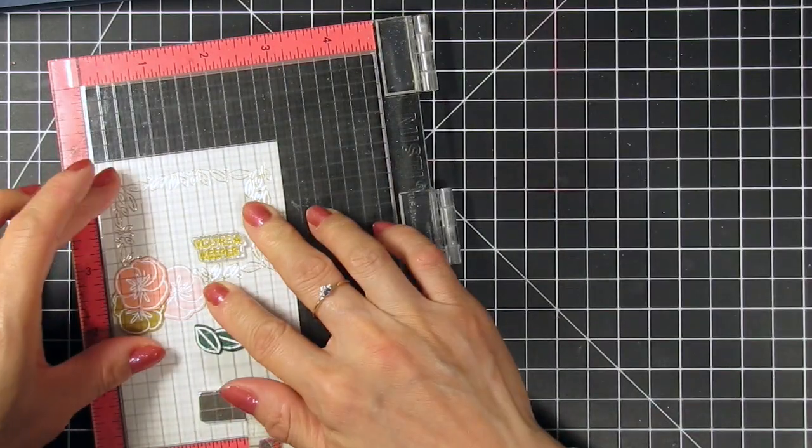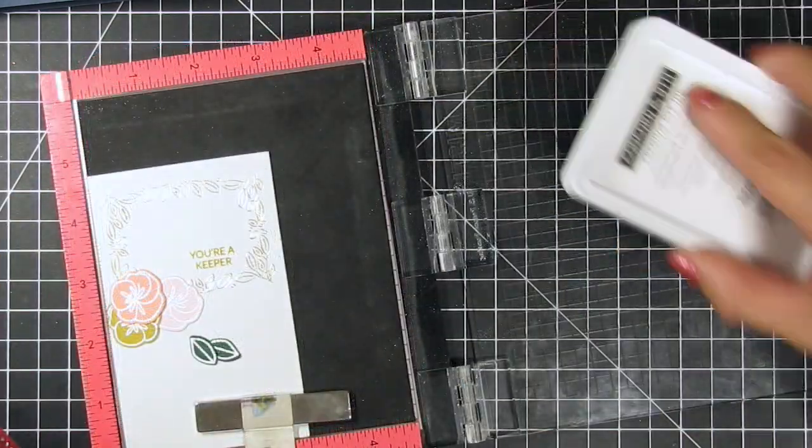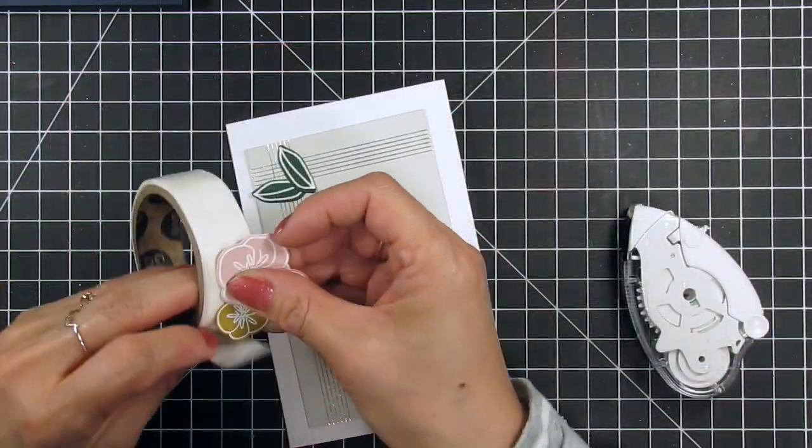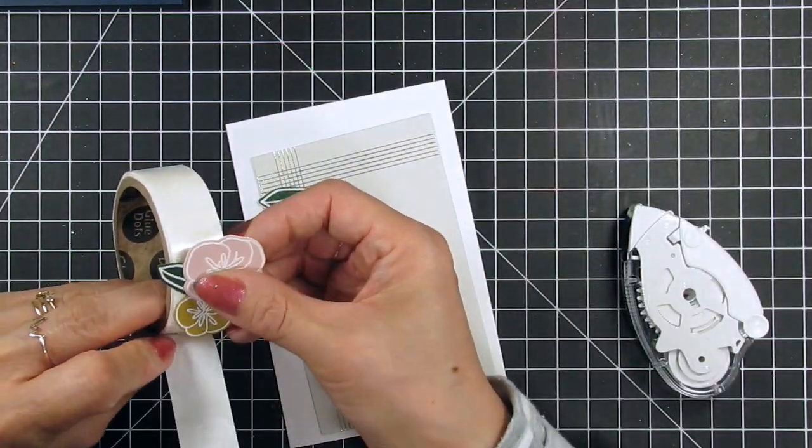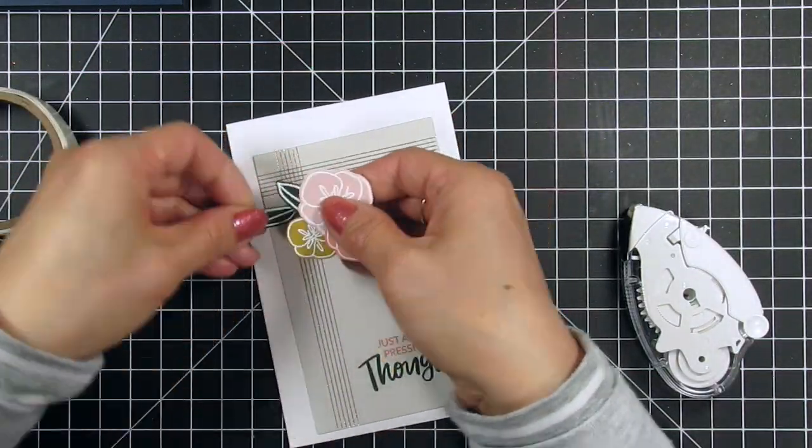After all the stamping is done I use glue dots to assemble all the flower clusters and attach them to the panels. Then I use a tape runner to attach all the panels to their respective card bases.